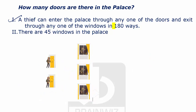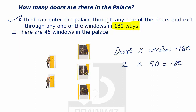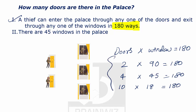As it is told that he has a total of 180 ways, the number of doors multiplied by the number of windows must equal 180. It could be 2 doors × 90 windows, or 4 doors × 45 windows, or 10 doors × 18 windows, and so on. There are many possibilities, so statement one alone is not sufficient to answer.